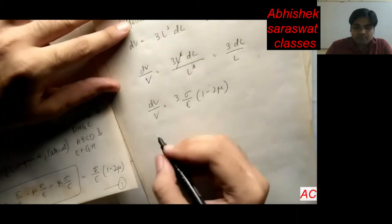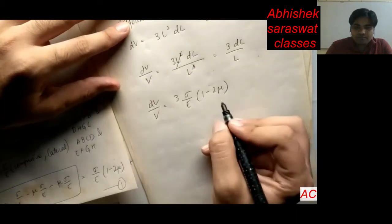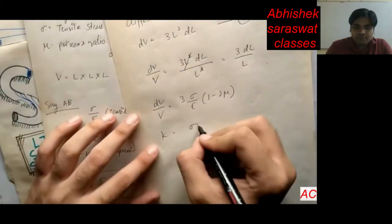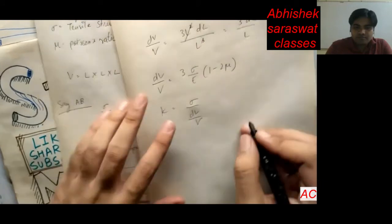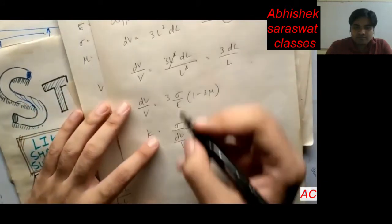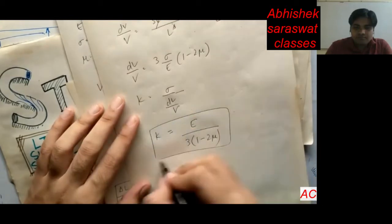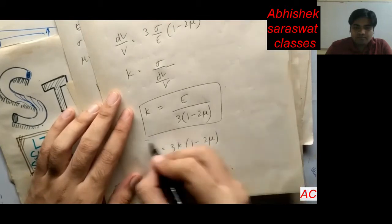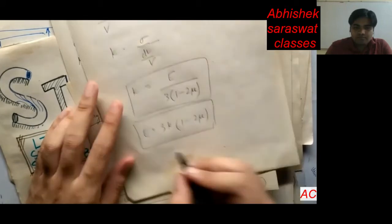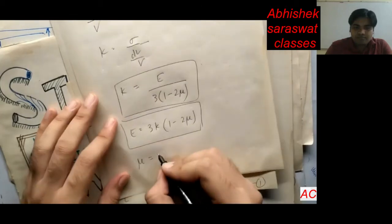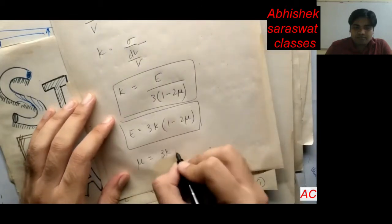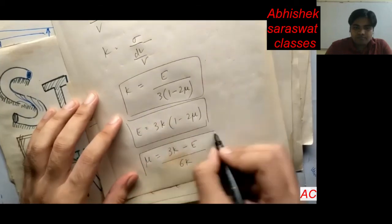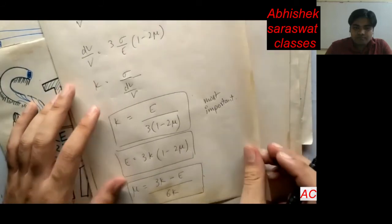From the formula of bulk modulus — direct stress divided by volumetric strain — rearranging the equation gives bulk modulus K equals E (Young's modulus) divided by 3 into 1 minus 2 nu. Equivalently, E equals 3K into 1 minus 2 nu. From here, Poisson's ratio can be expressed as nu equals 3K minus E divided by 6K. This is the relationship between Young's modulus and bulk modulus.